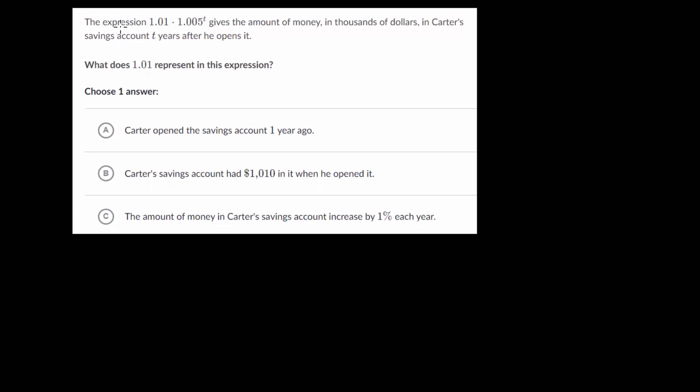For this one, the expression 1.01 multiplied by 1.005 raised to the t power gives the amount of money in thousands of dollars in Carter's saving account t years after he opens it. We need to know what does 1.01 represent in this expression. We could compare it to our formula, a times b to the t, where in this case our a value, that is the 1.01, that is our starting amount.